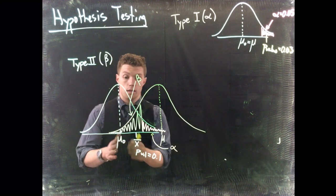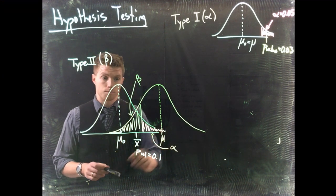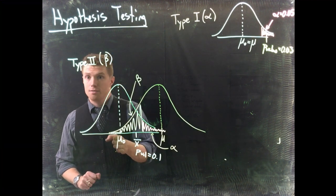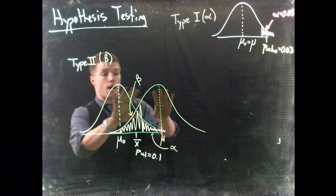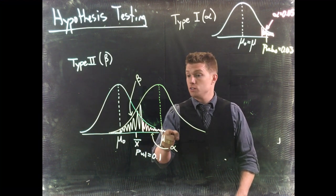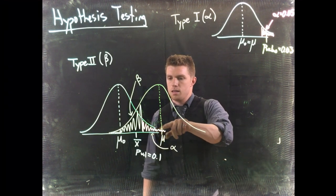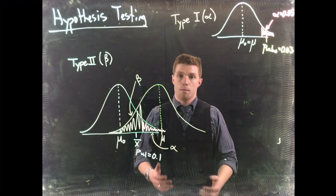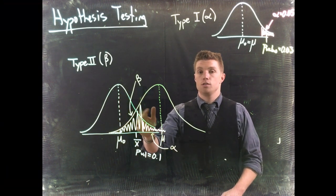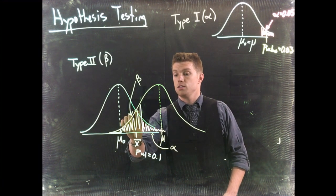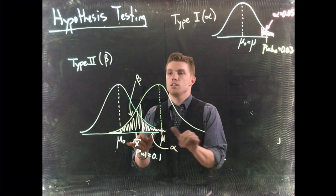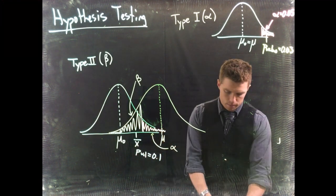We know the null hypothesis is wrong — the true distribution is over here — but when we test we only know the hypothesized distribution, and our sample wasn't big enough to show a difference in the means. Alpha (the pinkish area) is the probability we reject the null when it's actually true. Beta is the probability we fail to reject the null when the null is actually false.